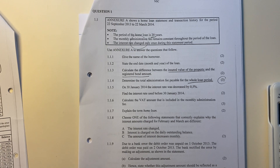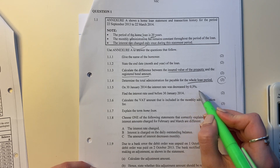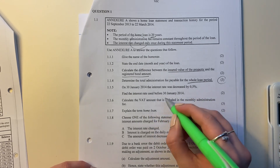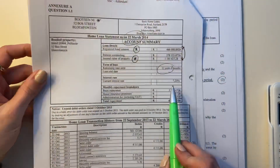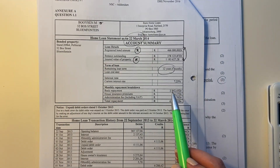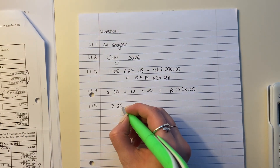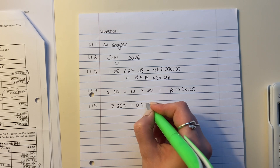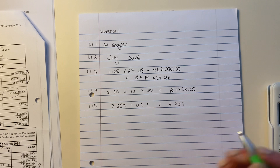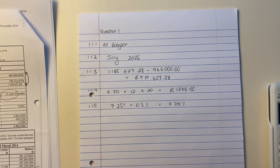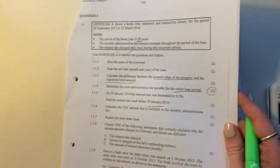Question 1.1.5 says: on 30 January 2014, the interest rate was decreased by 0.5%. Find the interest rate used before 30 January. So the 7.25% shown is the reduced amount. The rate prior to the reduction would therefore be 7.25% plus 0.5%, which equals 7.75%. That's your answer. It just wants you to understand the mechanism of what's being asked and presented.